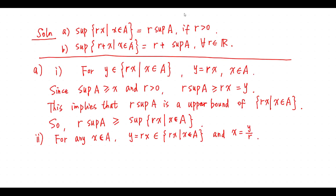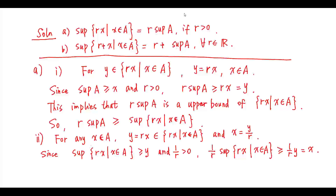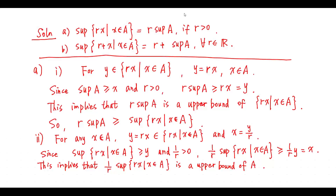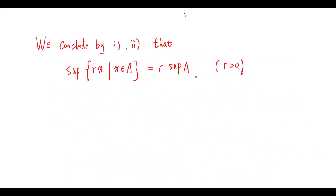Now, for any x in A, Y equals R times x is in this set, and x equals Y over R. Since the supremum of this set is greater than or equal to Y and 1/R is greater than 0, (1/R) times supremum of this set is greater than or equal to x. This implies (1/R) times supremum of this set is an upper bound of A, so (1/R) times supremum of this set is greater than or equal to supremum A. This says supremum of this set is greater than or equal to R times supremum A. We thus conclude this identity.